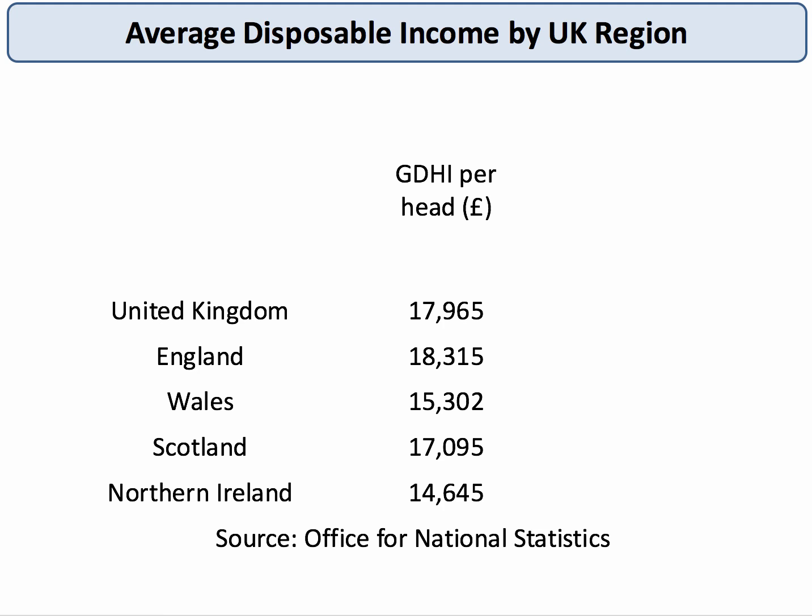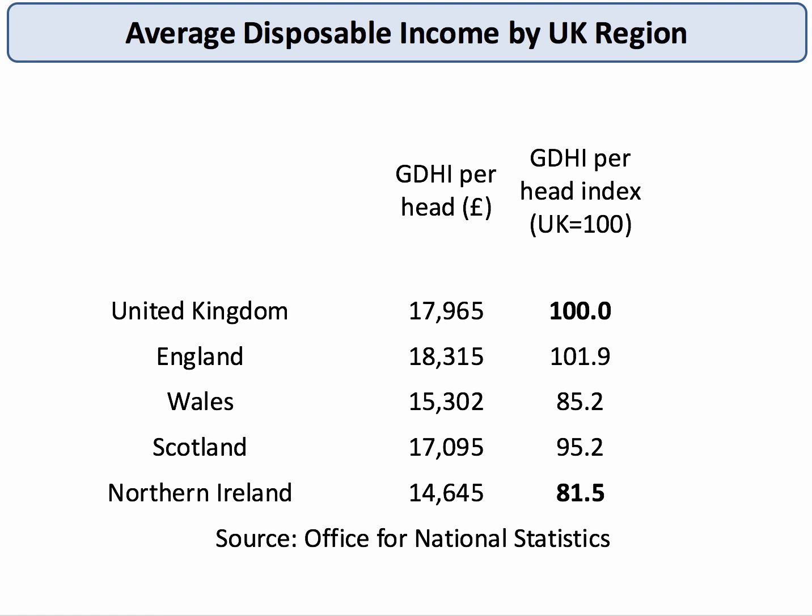We can express this data in pounds or we can convert the data into index number format, and I've done that for you here. We take the level of disposable income in the UK as our base for the index, and the base index always has a value of 100. And then we simply convert the data for England — £18,315 divided by £17,965 — and you get an index number for England of 101.9.